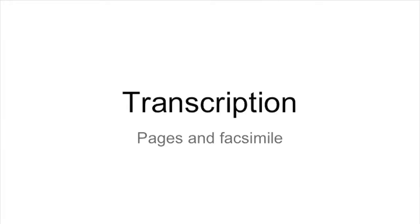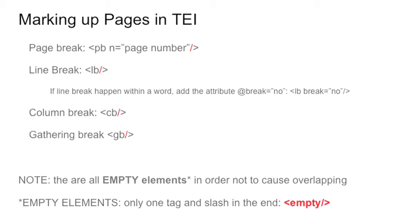The first things we want to record in the transcription is the structure of our manuscript: pages, and how to connect our pages to the facsimile. You may have seen these elements before. We talked about the LB element, the line break, but it is not alone — it is part of a family, the family of the milestones. We have other elements like PB, page break; CB, the column break; and GB, the gathering break.